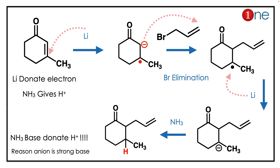In the first step, lithium donates an electron, leading to radical anion formation. The donation leads to both a radical and an anion. The anion is very reactive and has to react with allyl bromide. Here, an SN2 prime reaction happens — it attacks bromine, eliminates, and you have a new C-C bond.